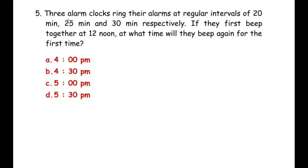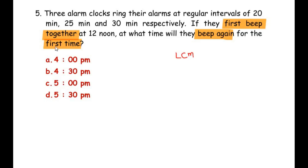Another Type 2 question: Three alarm clocks ring at regular intervals of 20 minutes, 25 minutes, and 30 minutes respectively. If they first beep together at 12 noon, at what time will they beep again for the first time? You can pause and think whether to find LCM or HCF. Since we need to find the first time after 12 noon all three alarms ring again, this becomes the Lowest Common Multiple of 20, 25, and 30.